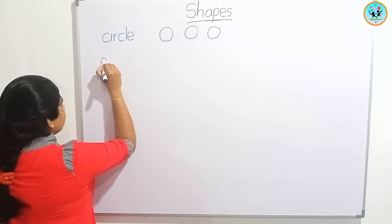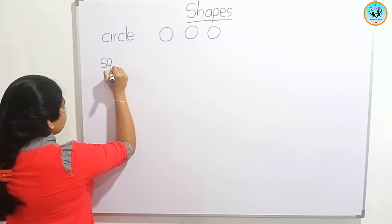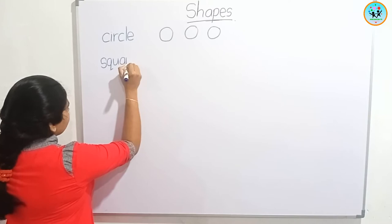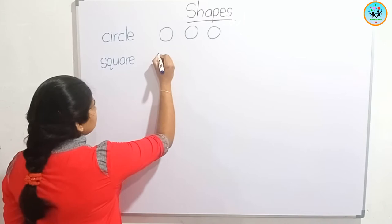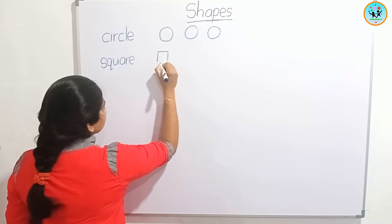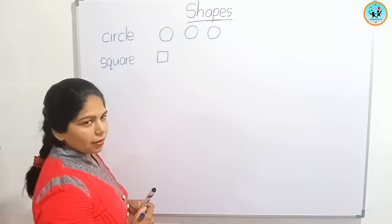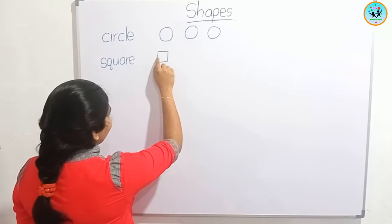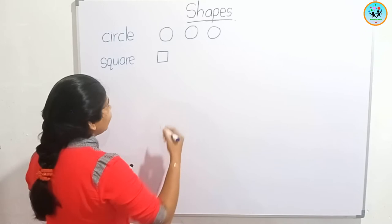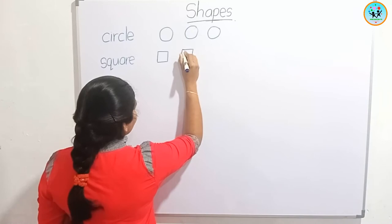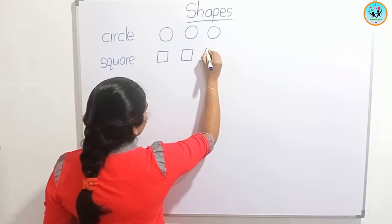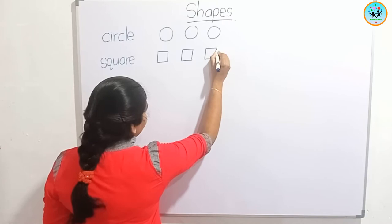We will learn to draw a square. Tell me, how many sides are here? One, two, three, four. These four sides are equal.